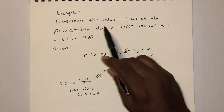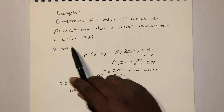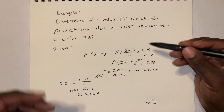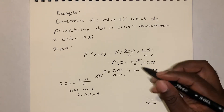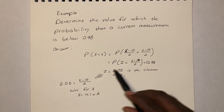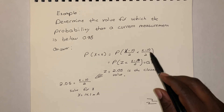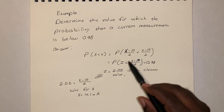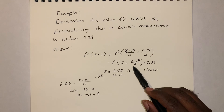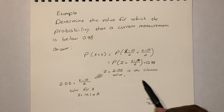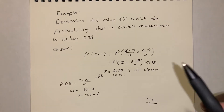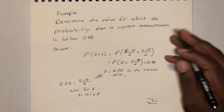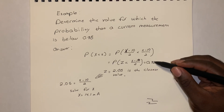Another example: determine the value X such that P(X < x) = 0.98, given μ = 10 and σ = 2. We write P(X < x) = P(Z < (x − 10)/2) = 0.98. Search the table for the value closest to 0.98 — it will be four or five digits, so find the closest match possible.